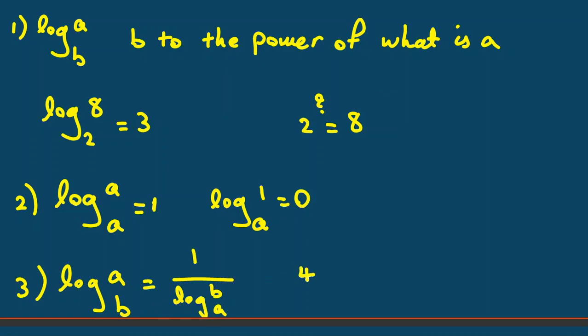Now, the fourth rule is if you have a product, log base A of MN is log base A of M plus log base A of N.